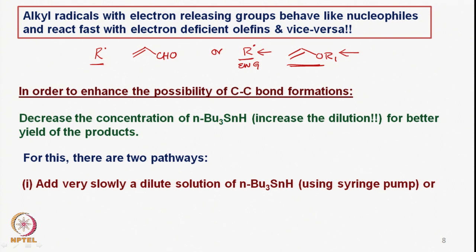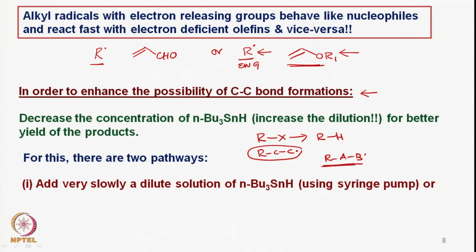To enhance the possibility of C–C bond formation and stopping after the first bond, while also preventing reduction of RX to RH, we need to ensure C–C bond formation is favored. The competition is between reduction and C–C bond formation, so we need to decrease the concentration of tributyltin hydride — that is, increase the dilution in the reaction solution.